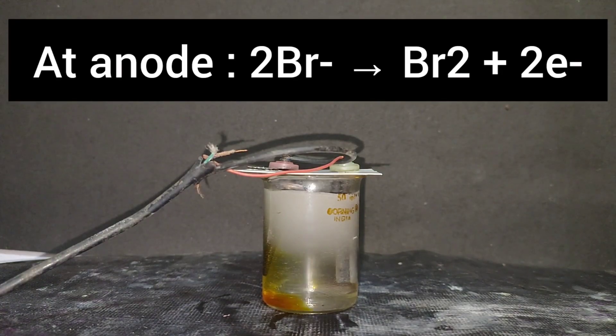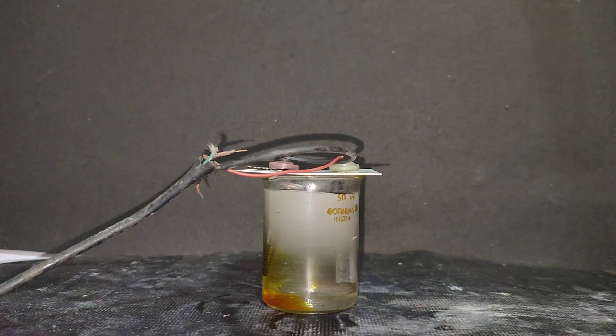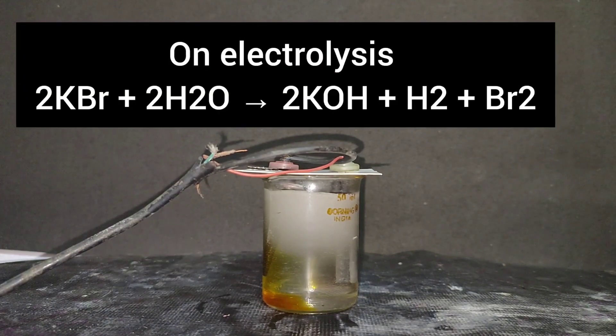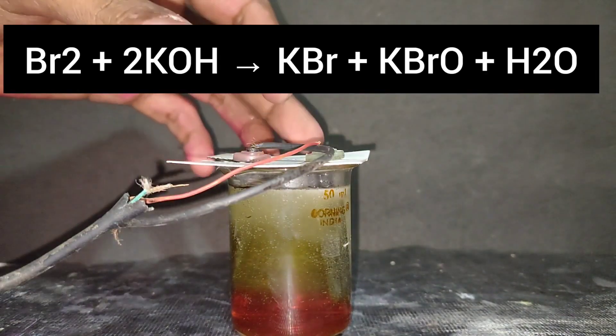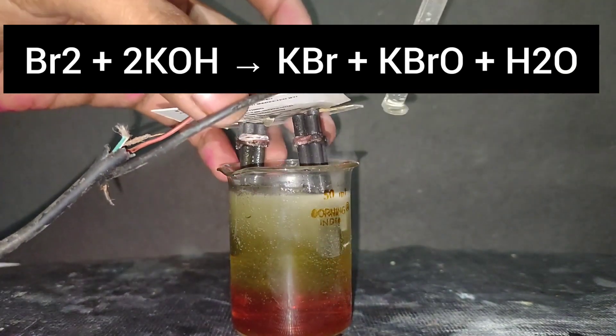Due to low oxidation potential of bromide, the bromide ions are getting oxidized to bromine. Now as a byproduct, potassium hydroxide is being formed in the reaction and the bromine then reacts with potassium bromide to form potassium hypobromide.